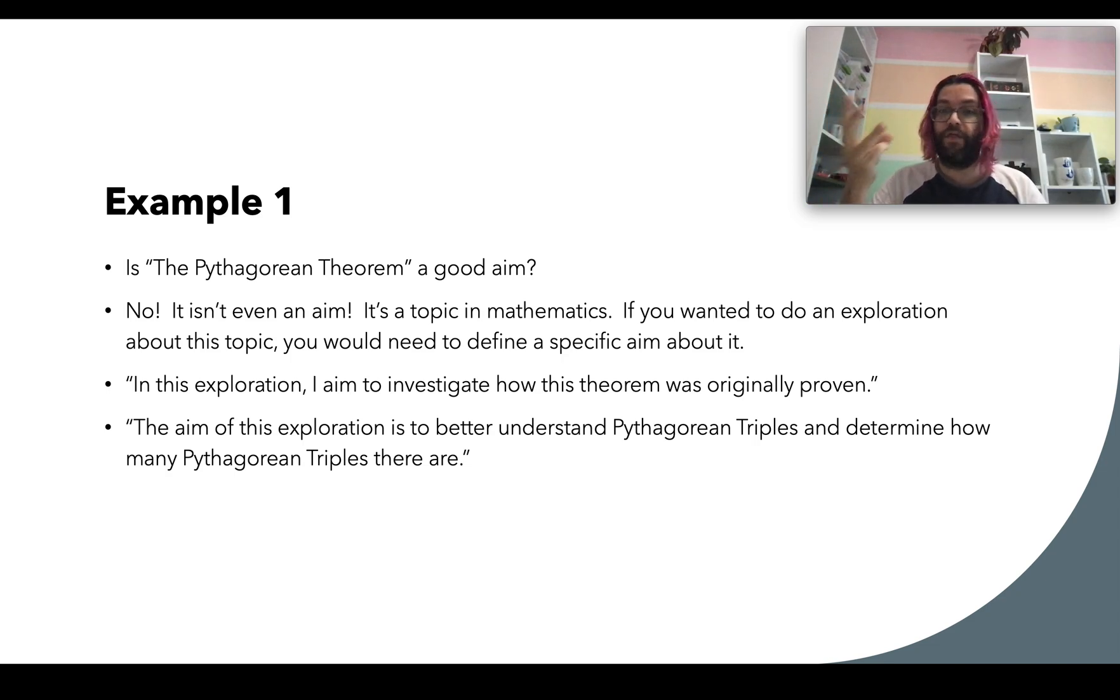So for instance, 3, 4, 5 is a Pythagorean triple, because 3 squared plus 4 squared equals 25, which is 5 squared. So this could be an AIM.